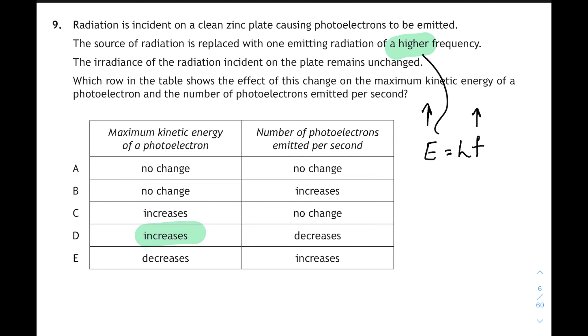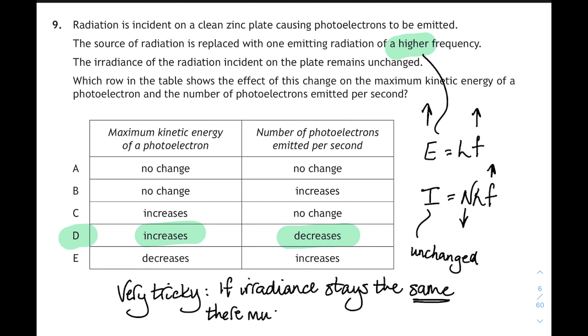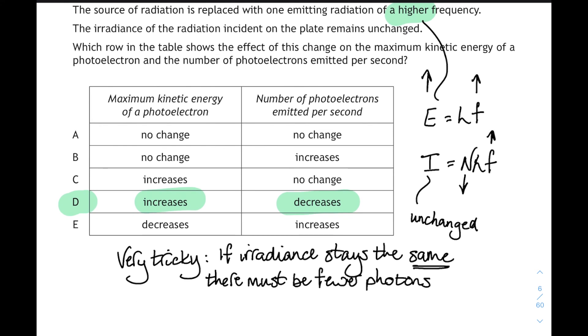Now, the irradiance is staying the same. That means the total power per unit area stays the same. The energy per second stays the same. But our photons have got more energy. Now, this is tricky. If our photons have got more energy, then for the same irradiance, because irradiance, remember, is the number of photons times the photon energy, if the frequency goes up and the irradiance stays the same, the number of photons has to go down. If the irradiance is unchanged, the energy of each photon has gone up, then the number of photons has to go down and decrease. And if there's less photons, there will be less photoelectrons emitted per second. That's very difficult. Remember, if the irradiance stays the same, there must have been fewer photons, and fewer photons means fewer electrons.